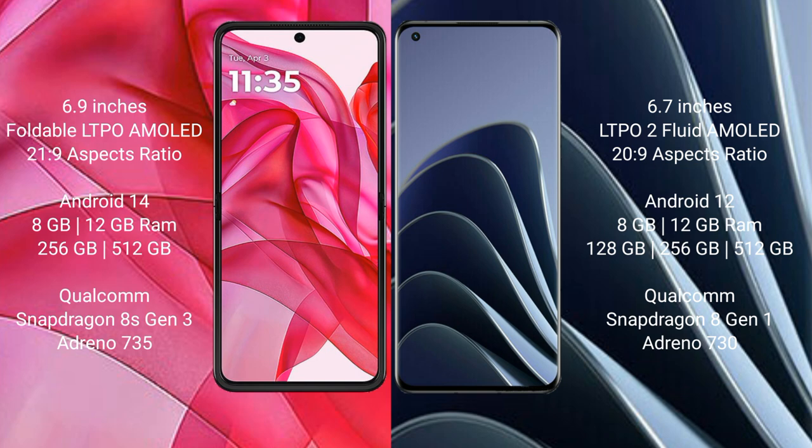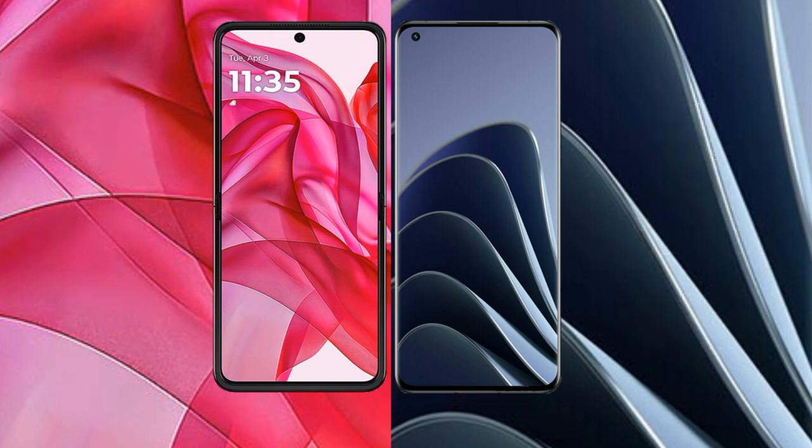Motorola RAZR 50 Ultra comes with 8GB or 12GB RAM and 256GB internal storage, Qualcomm Snapdragon 8 Gen 3 processor, and GPU Adreno 735. OnePlus 10 Pro comes with 8GB or 12GB RAM and 128GB or 256GB internal storage, Qualcomm Snapdragon 8 Gen 1 processor, and GPU Adreno 730.